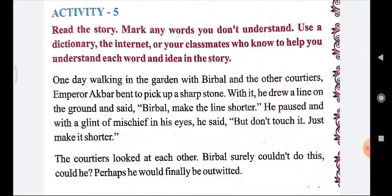There was a story in which it was mentioned that one evening, Akbar along with Birbal and other courtiers were walking in his garden. At that time, Emperor Akbar felt mischievous. He picked up a sharp stone and drew a line on the ground. Looking at Birbal and other courtiers, he told them that they need to make the line shorter, but the condition was that they cannot touch it.